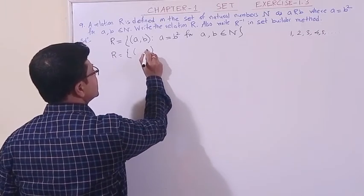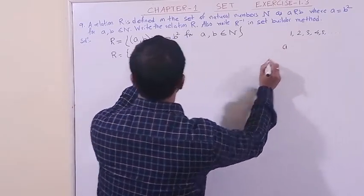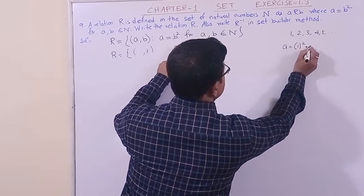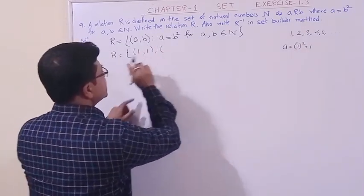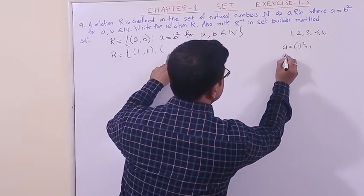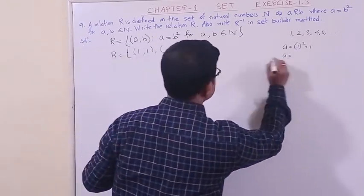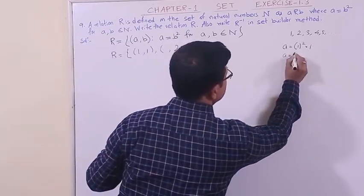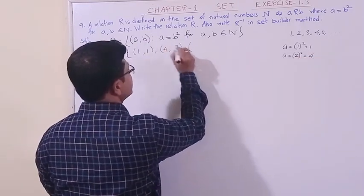Then a equals b squared. We have considered b as 1, so a equals 1 squared equals 1. This is the first element (1,1). For the second element, suppose b equals 2. If b equals 2, then a equals 2 squared equals 4, giving us (4,2). I think you understood what to do.